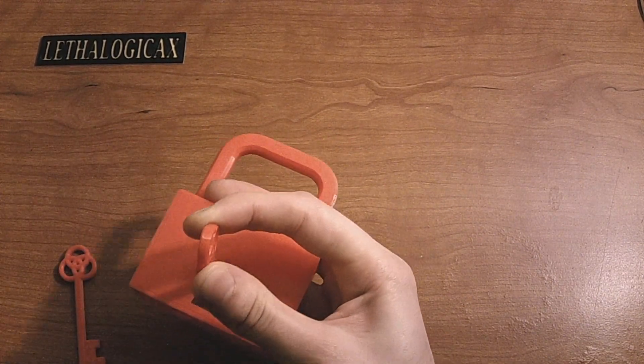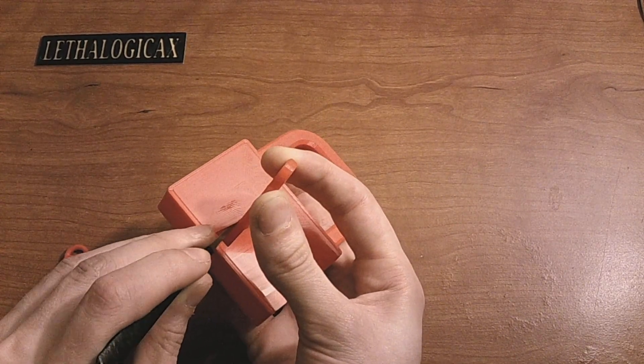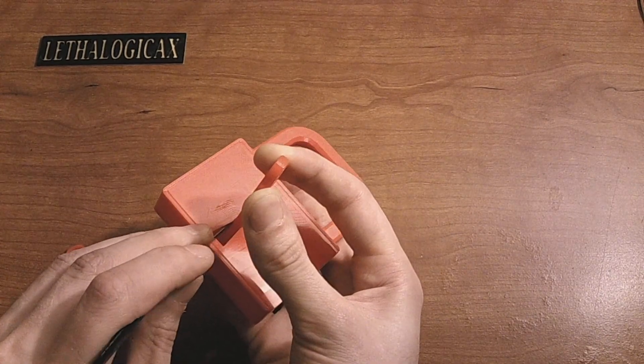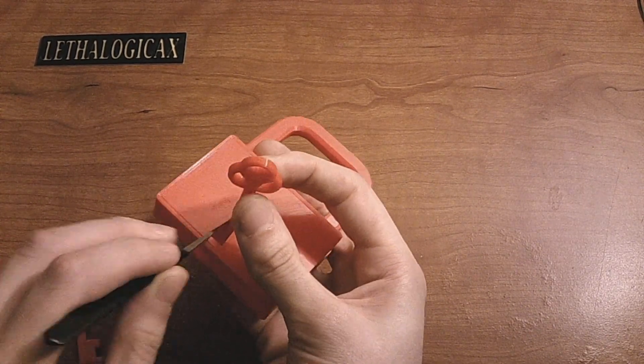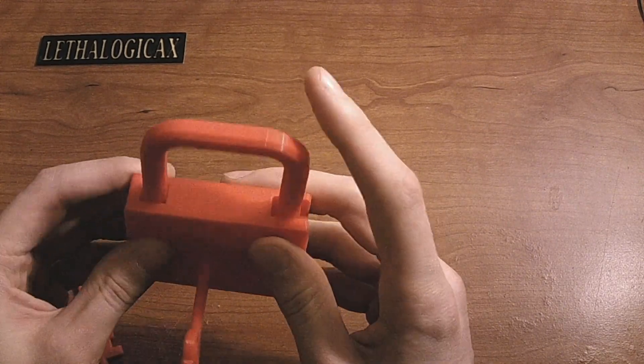Now plastic locks do need a lot of tension in order to get them to bind properly. See if we can get this one open here. There we go. Not too hard at all. There is only two gates after all.